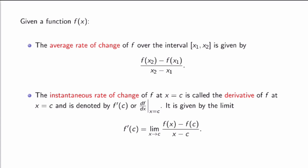So the function here could be a position function, in which case the derivative would be velocity. But the function could also be anything else. It could, for example, be the velocity function itself, in which case its derivative or its instantaneous rate of change would be the acceleration. All right, so this is what differential calculus is about.